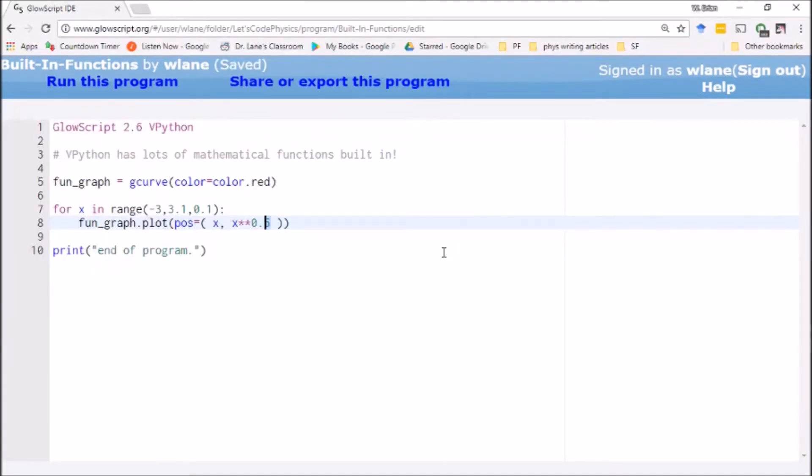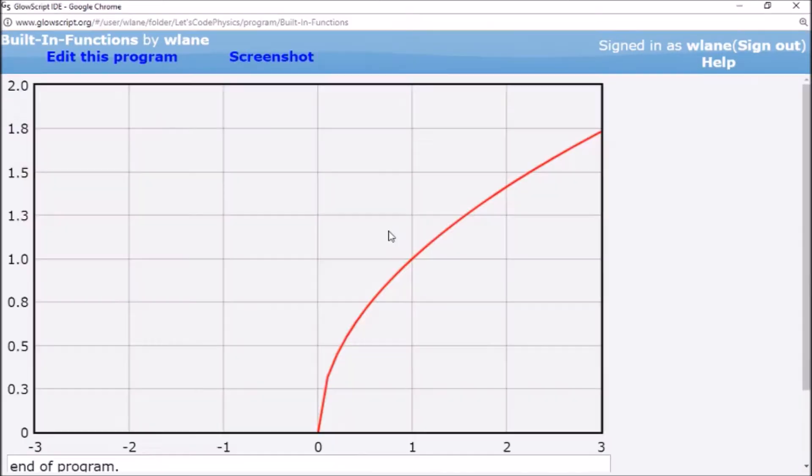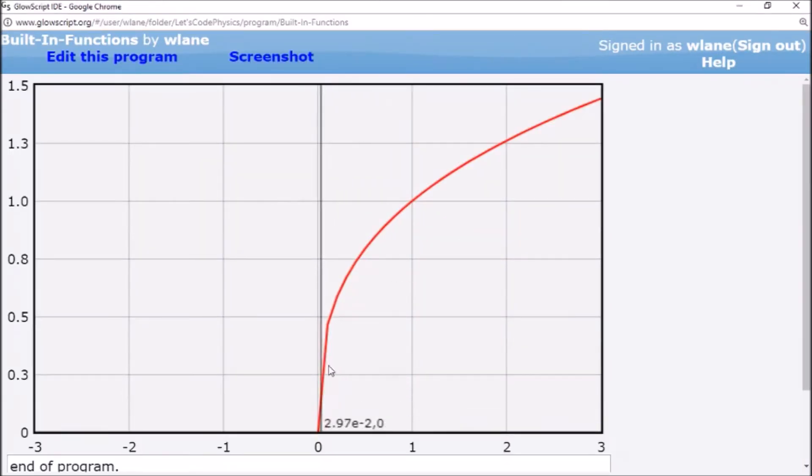But that also means you've got access to other powers too, right? So I can do the cube root of x by doing 0.3 repeating in the exponent there. So here we've got the cube root of x.